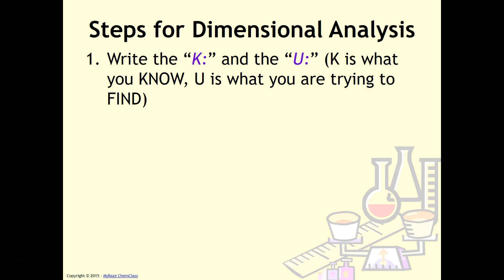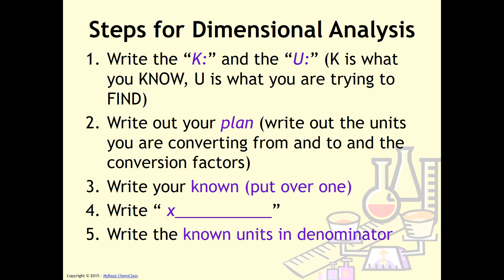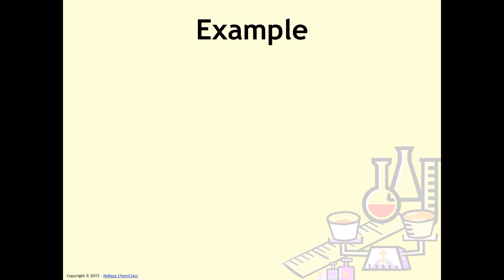For right now, I highly recommend that you do this. The second step is to write out the plan. So you write out the units that you are converting from and converting to. Again, this is just a helpful strategy since you're so new at dimensional analysis. Step three is to write your known and put it over one. Step four is to write a multiplication sign and a line. Step five is to write the known units in the denominator. Now we're going to head into our first example where I use these steps.